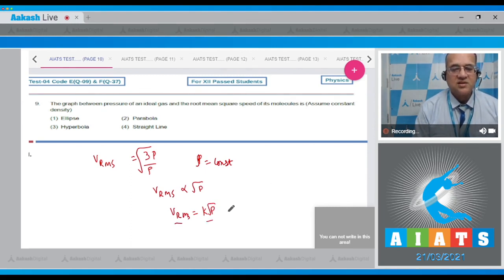So the graph between this and this is a parabola, because P is coming to be proportional to V squared. Y is equal to k into root of X. So the answer to this option is 2.